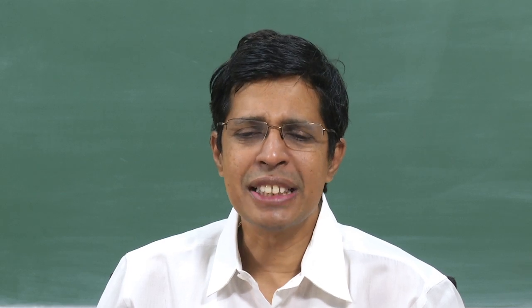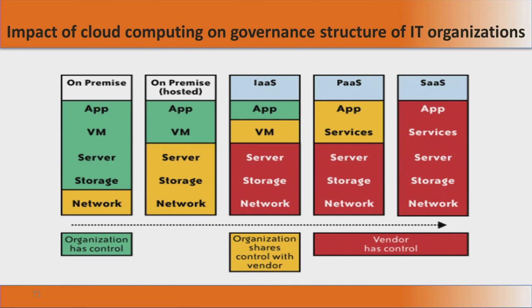The next model is Infrastructure as a Service, or IaaS — this is the real cloud we are talking about. The server, hardware, storage, and network are all under the control of the vendor; he is giving you the infrastructure as a service. The VM is shared between the organization and the vendor, while the application is your own. Whatever is shown in blue or green belongs to the organization, and the legend shows: green means organization has control, orange means shared control, and red means vendor alone has control.